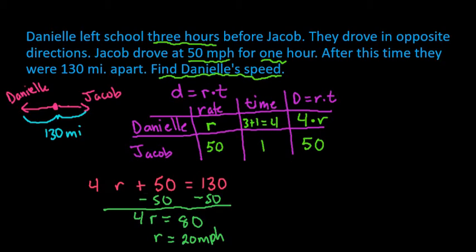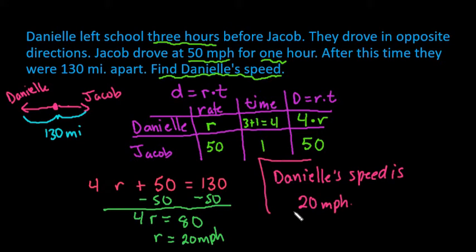So remember that it's important to answer word problems with a sentence, so that you know who you're talking about. So we can say that Danielle's speed is 20 miles per hour on average. So Danielle is averaging 20 miles per hour where Jacob was averaging 50 miles per hour, and they ended up being a total distance of 130 miles apart. And you can always check this to make sure that it makes sense. If I do 80 plus 50, it gives me 130, so that does make sense.